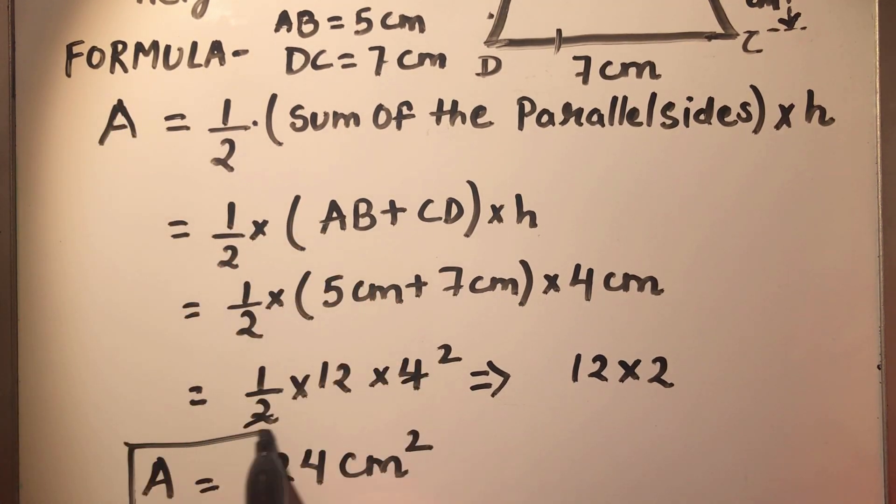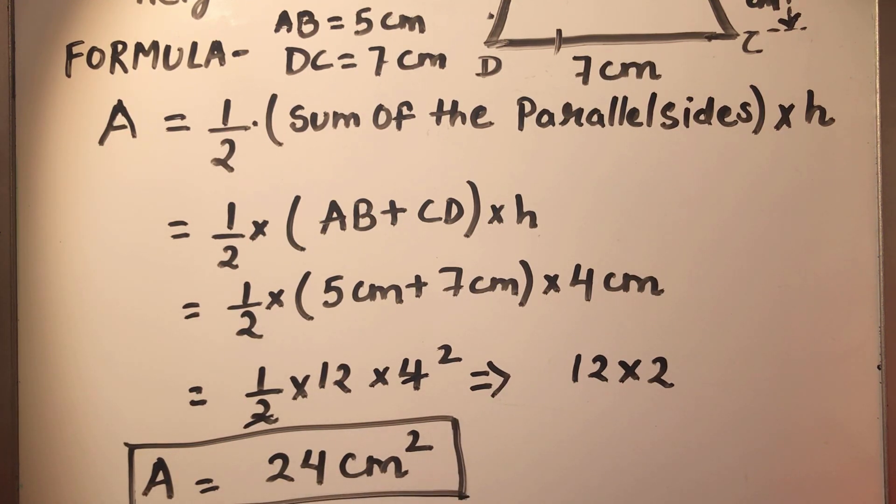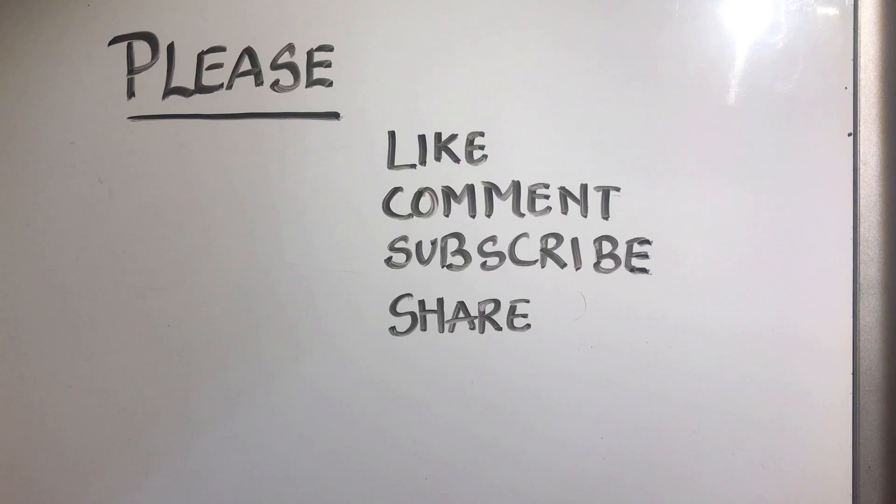So this is the area of trapezium. For finding the area of trapezium we should know the distance between the parallel sides and the length of the sides. This is how you can calculate the area of trapezium.